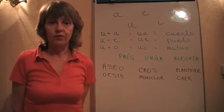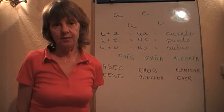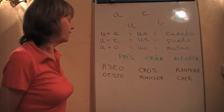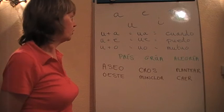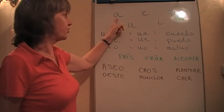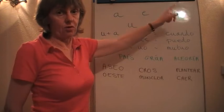Hi, we're on video 5 and we're coming to the end of our explanation about diphthongs. We had the last combination remaining, which was the weak u combined with the strong a, e, or o.